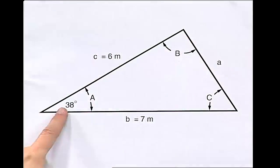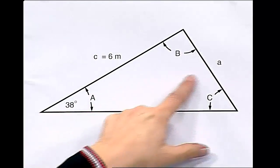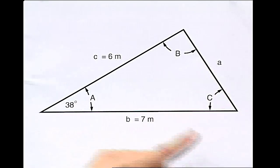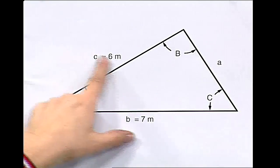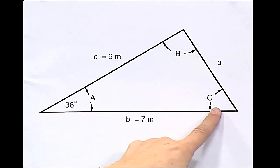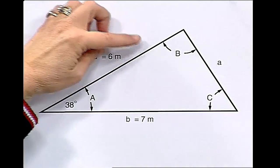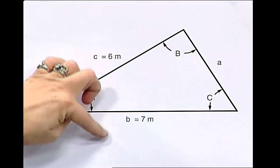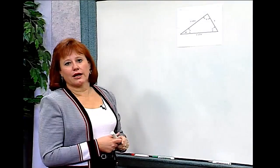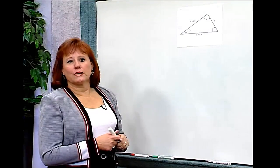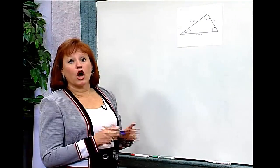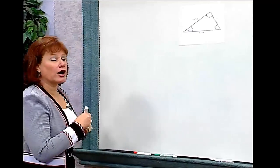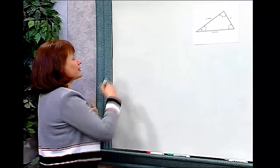So in this case, if I look at 38, I don't know the side across from it. If I look at 6, I don't know the angle. If I look at angle B, I don't know it, but I do know the side. I haven't got any ratio that I can use, so I need to rely on another form, and that's called the law of cosines.